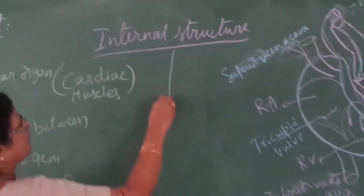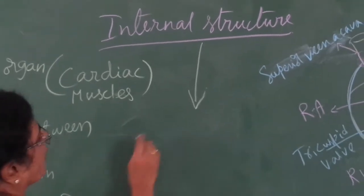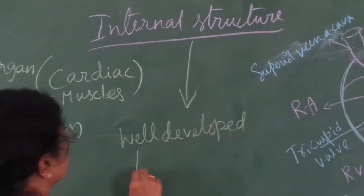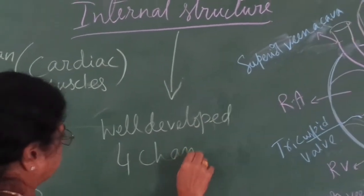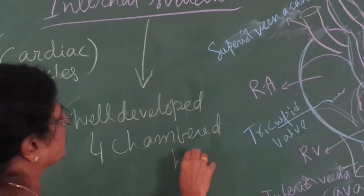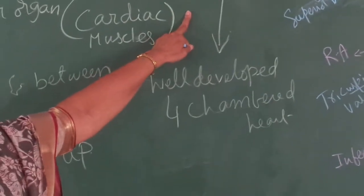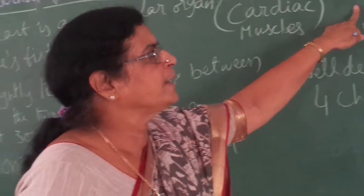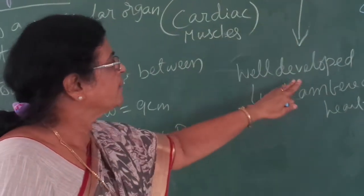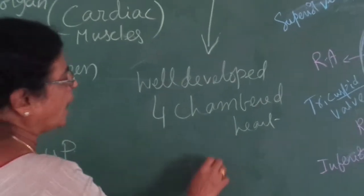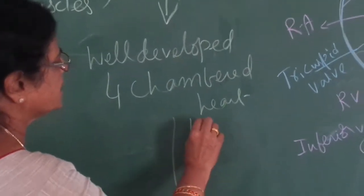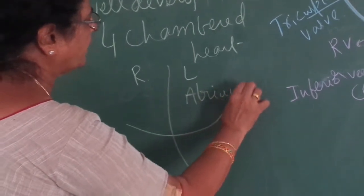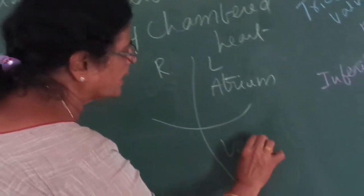Coming to the internal structure — the human heart is well developed, a four-chambered heart. Humans are warm-blooded organisms and need more and more energy to maintain their body temperature throughout their life. The four chambers do not allow mixing of blood. The left side and right side are separated. The upper two are called atria, and the lower two are called ventricles.